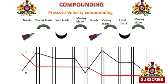These are the compounding processes used for reducing rotor speed in the case of impulse turbines. Thank you for watching this video. For more updated videos, you can subscribe to my channel, Learn and Grow. Thank you.